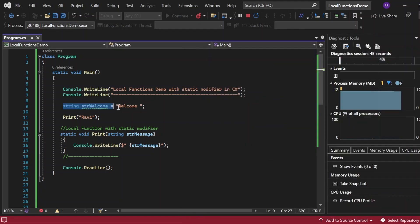I wanted to show you this demo because I want to demonstrate that whatever variables we define outside of the static local function, we're not able to access inside that local function. That's why when we tried to use str welcome, it was giving us the error that a static local function cannot have a variable which is defined outside of it.